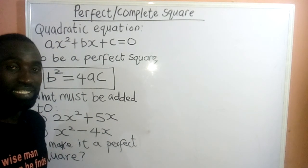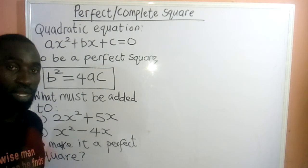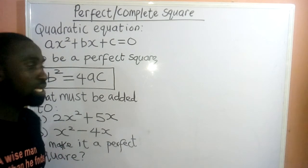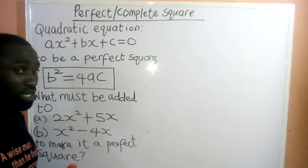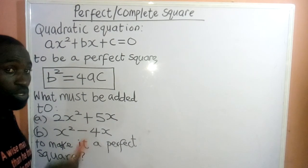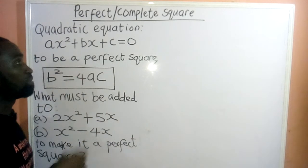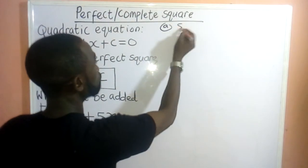And what did we say? We said, anytime we are given questions under perfect square, we will apply this formula. So, let's try and solve these questions applying this formula. So, the first one, switch on to the first one.